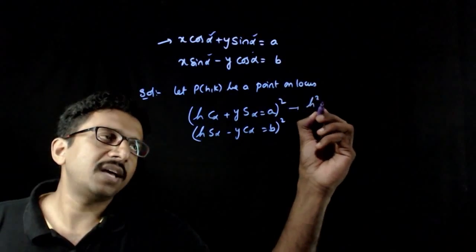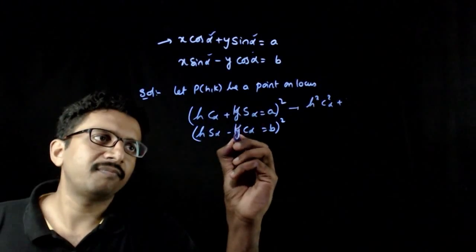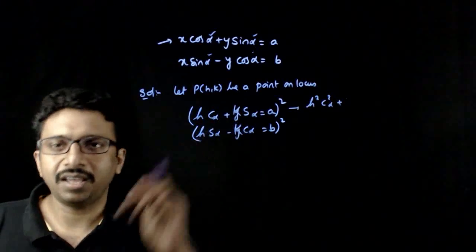You have h square cos square alpha plus, sorry, you have k. I am substituting h and k in the place of x and y.